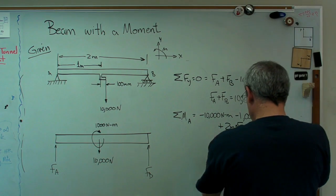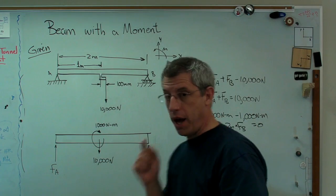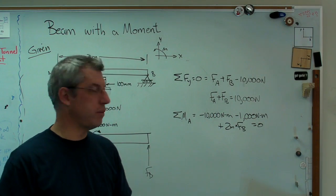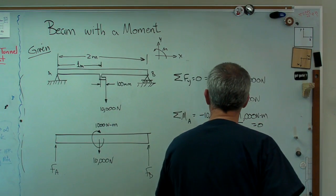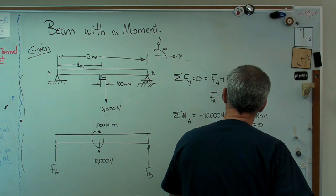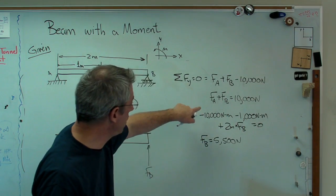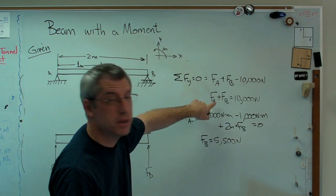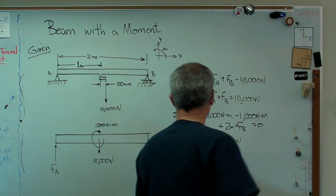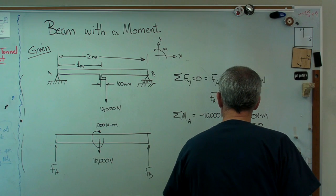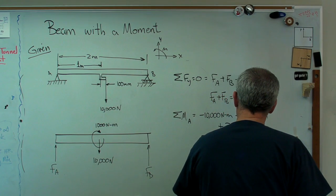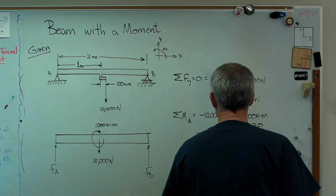So if I solve that one, I'm going to find out that F_B equals 5,500 newtons. And because the sum of them, the F_A and F_B equals 10,000, I'm going to find out that F_A equals 4,500 newtons. So there's that part of the answer.